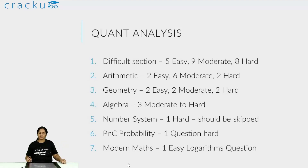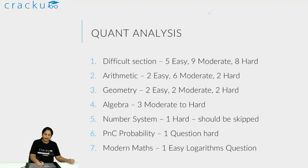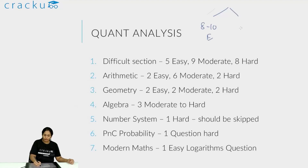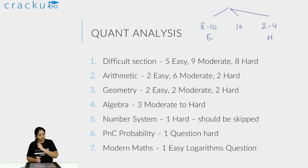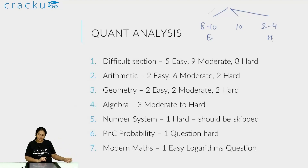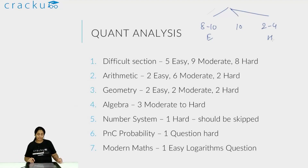This was a difficult section. Generally, the distribution you see is that out of 22 questions, around 8 to 10 should be easy, another 10 should be moderate, and 2 to 4 should be hard. Here the distribution was quite opposite — there were more harder questions and fewer easier questions. So the entire quant section was harder overall.